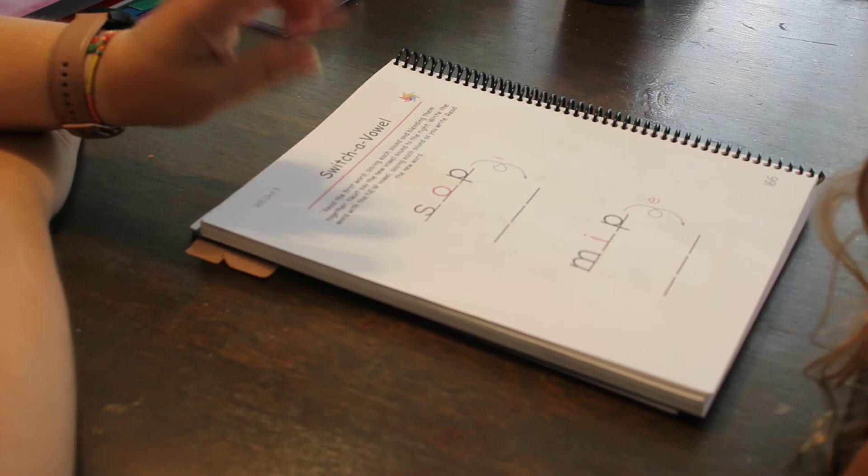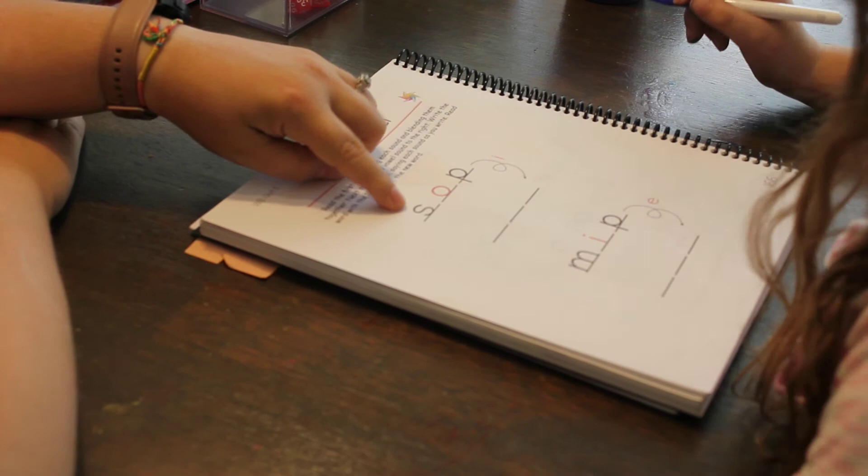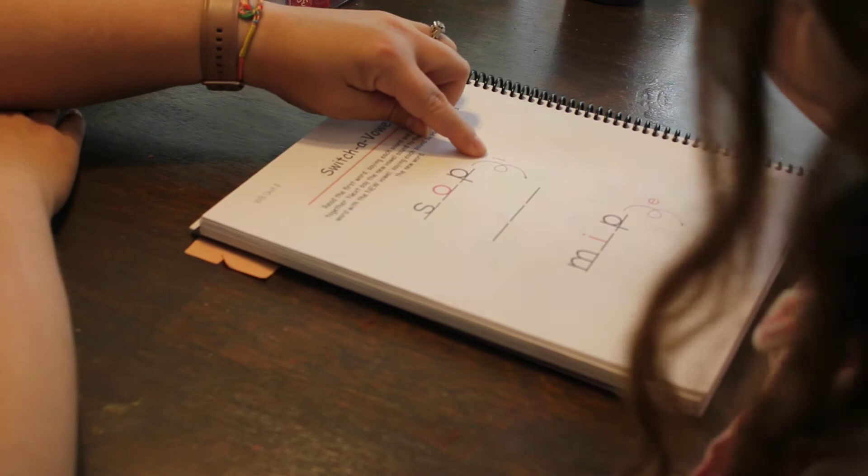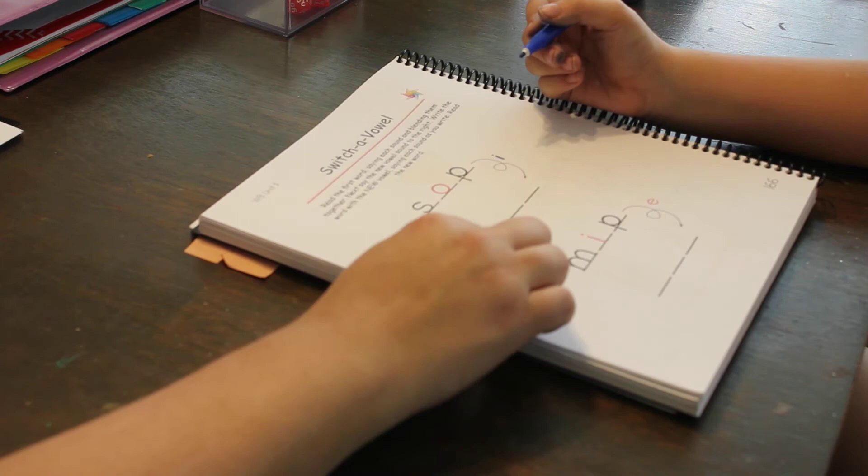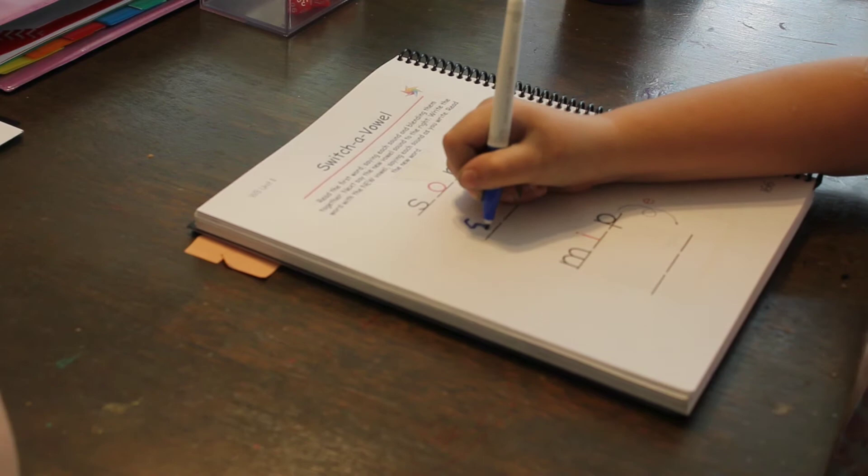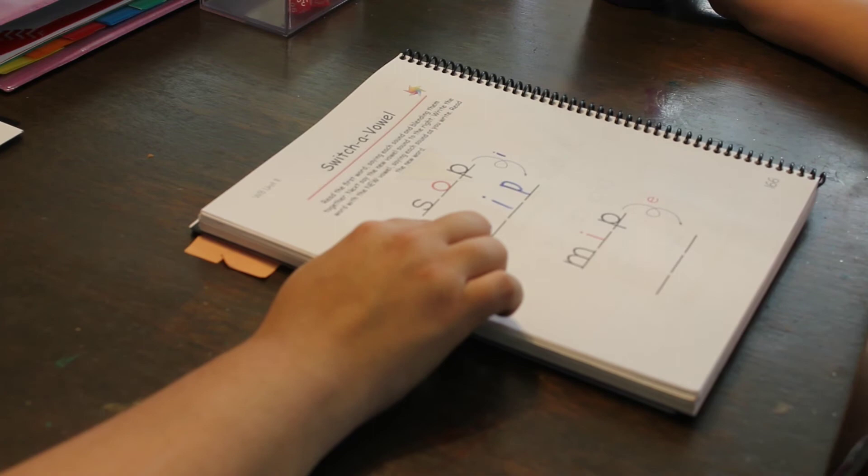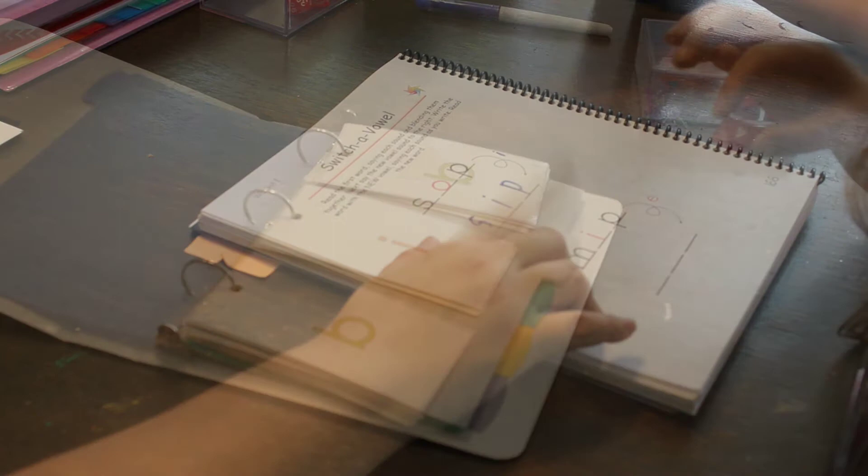We're going to play switch about, remember we played this before. So what does it say now? There's no 't', so it says 'sop'. We want to change the vowel from an 'o' and the 'r' sound to the - what sound does this one make? Good, so can you change the vowel here? Good, all right, so now what does it say? Sip, like you're taking a sip of your drink.